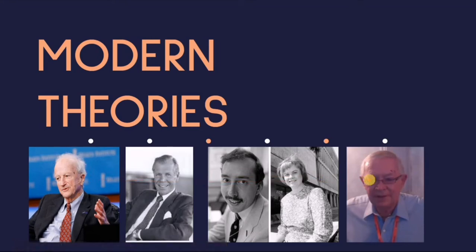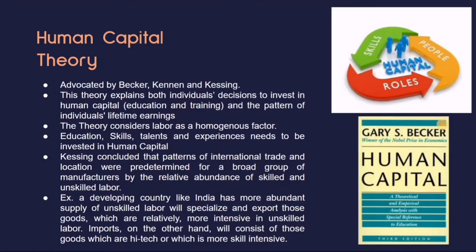The first theory is what we call the human capital theory. This is one of the modern theories of international trade, advocated by Becker, Kennan, and Kesing. According to this theory, both individuals' decision to invest in human capital such as education and training, and the pattern of individuals' lifetime earnings, are determinants of international trade. The theory considers labor as a homogeneous factor, meaning labor is standard or common throughout the population.